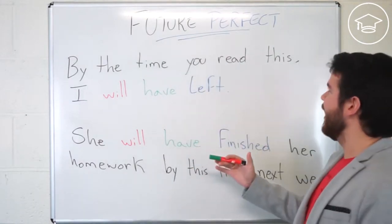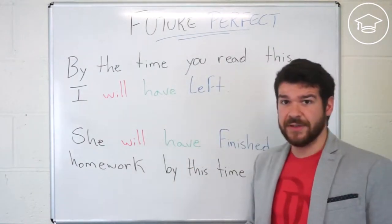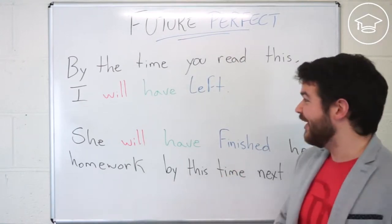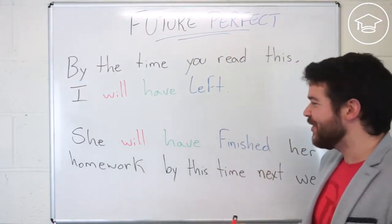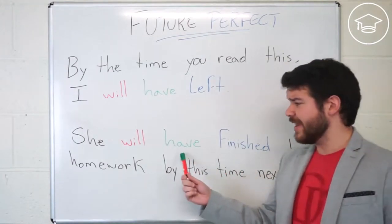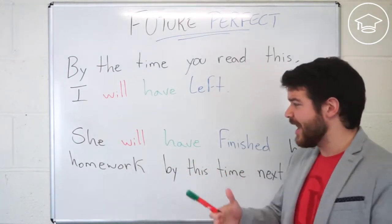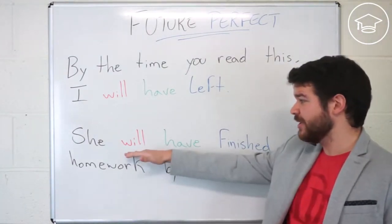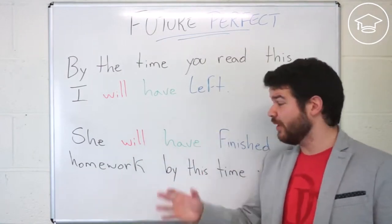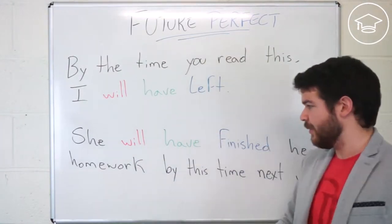By the time you read this, I will have left. However, I'm still here, but you understood it. So she will have finished. Take a look — 'have' is not conjugated, it's not 'has,' because it's future. So it's the same for everybody: she will have, we will have, you will have.